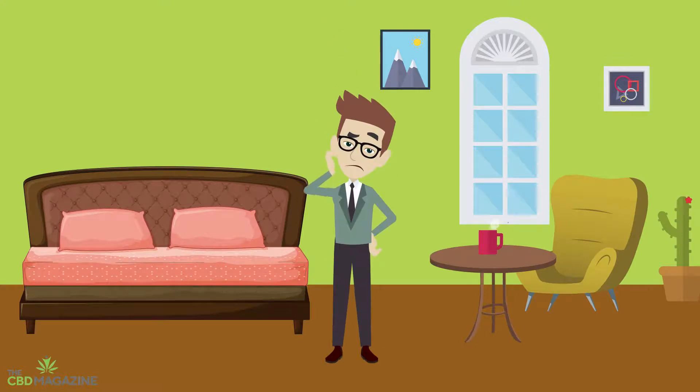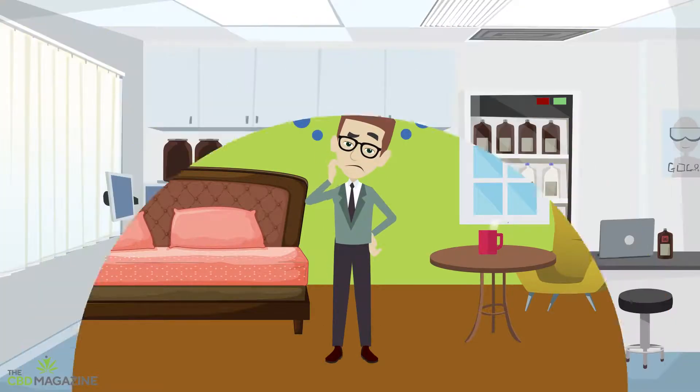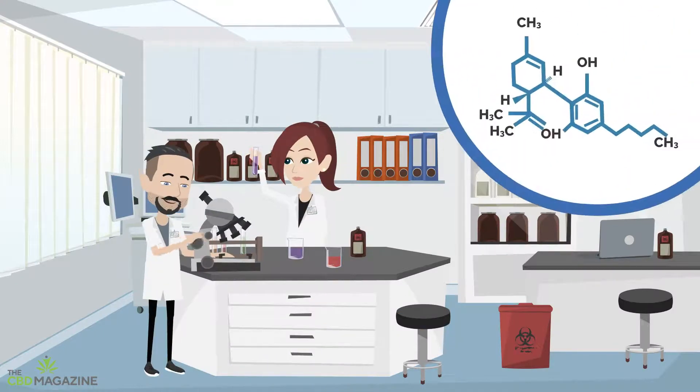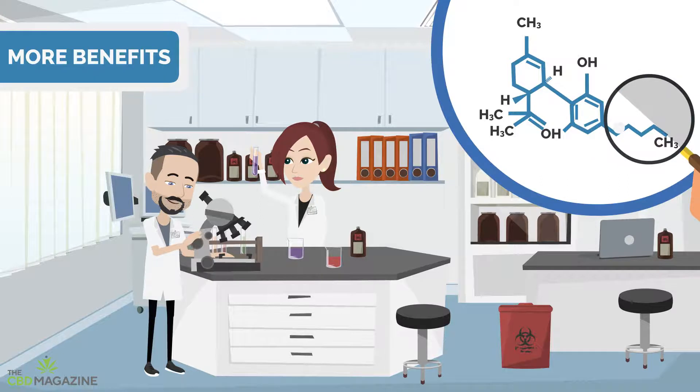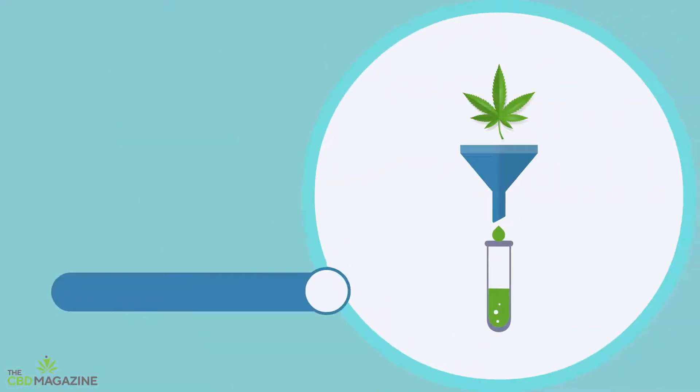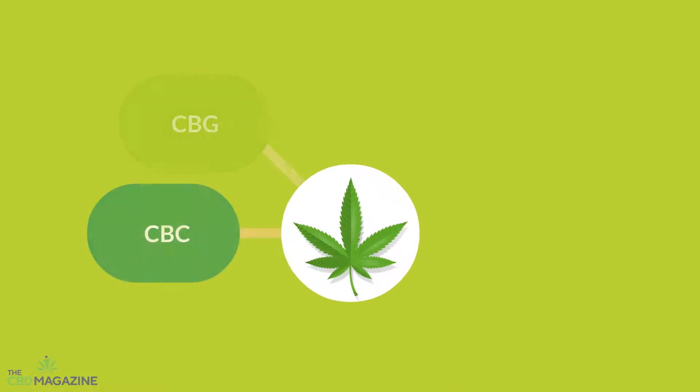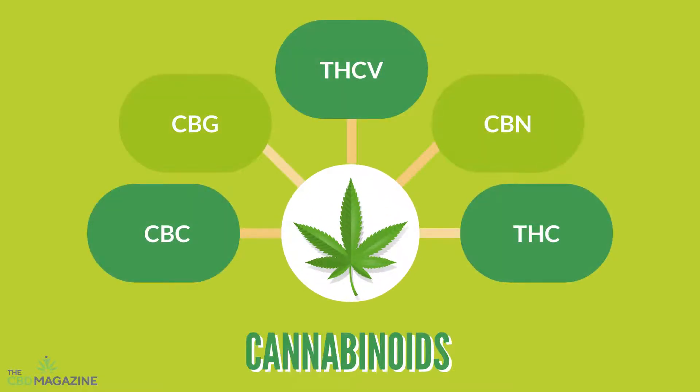When it comes to CBD, we often hear terms like the entourage effect or broad spectrum. Scientists have found that when you combine different compounds of the cannabis plant, you get more benefits than if you took only one. This is called the entourage effect. The cannabis plant contains hundreds of compounds providing different health benefits. These are called cannabinoids.